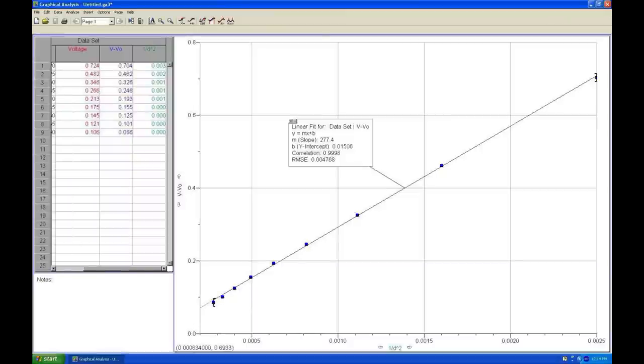Plot intensity versus 1 over r squared. This is expected to be a straight line. The correlation coefficient will indicate how nearly straight the data is.